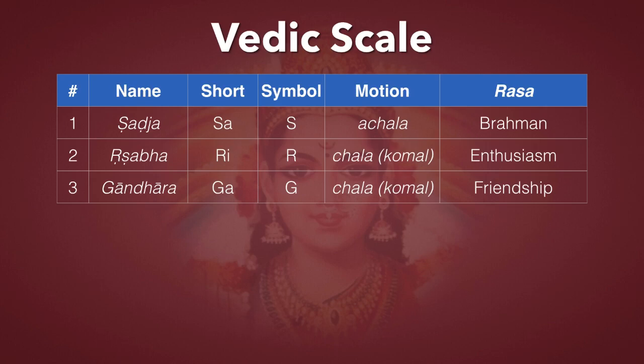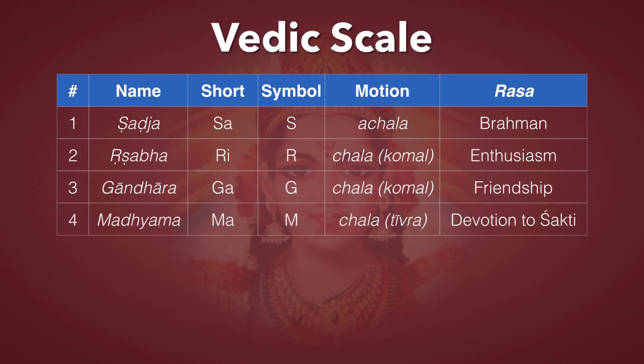The fourth Swara is Madhyam, or Ma for short. The symbol is M, and it's also Chala. It can be either Shuddha — natural — or Tivra — sharp. It represents devotion to Shakti, or when it's sharp, the devotion of Shakti to Shiva.